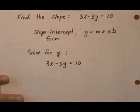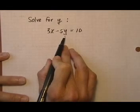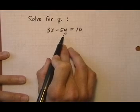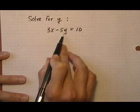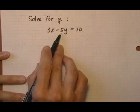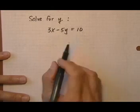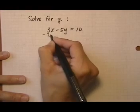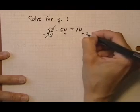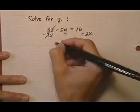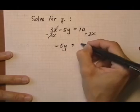Once we solve for y, we know that the coefficient of x is the slope. To solve for y, we use the regular process of solving a linear equation — we want to isolate y on the left side. That means the minus 5 needs to go away and so does the 3x. Always start with adding and subtracting, so we're going to first subtract 3x so that it cancels out and goes to 0, as long as we subtract it from the right side too. We're left with negative 5y equals 10 minus 3x.